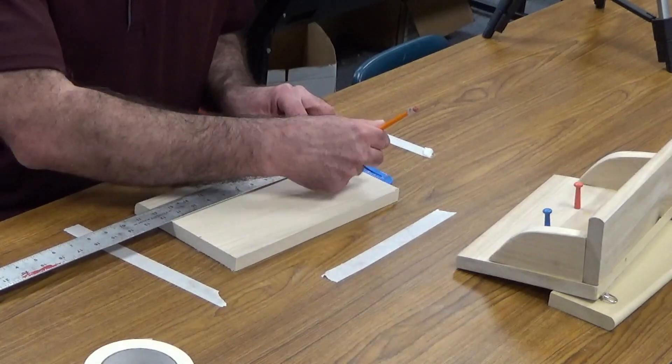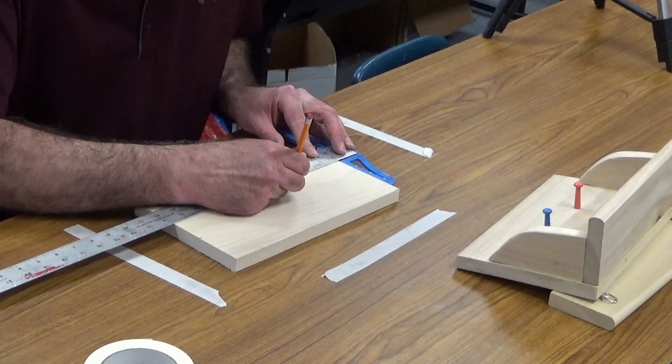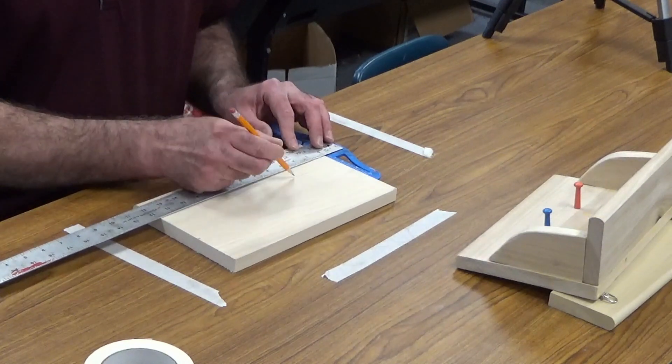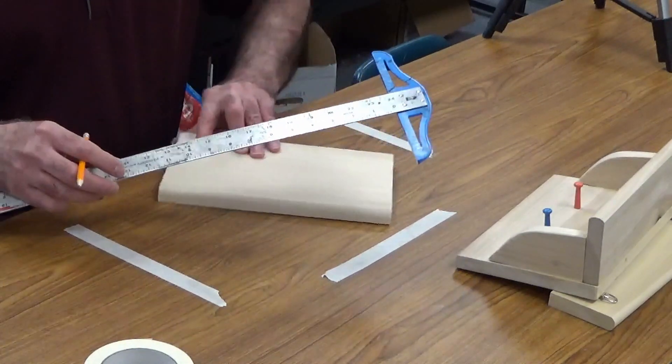Now from each edge, from the left edge I'm going to measure in four inches and make a small vertical line. I'm going to drill a hole where the horizontal and vertical line cross.